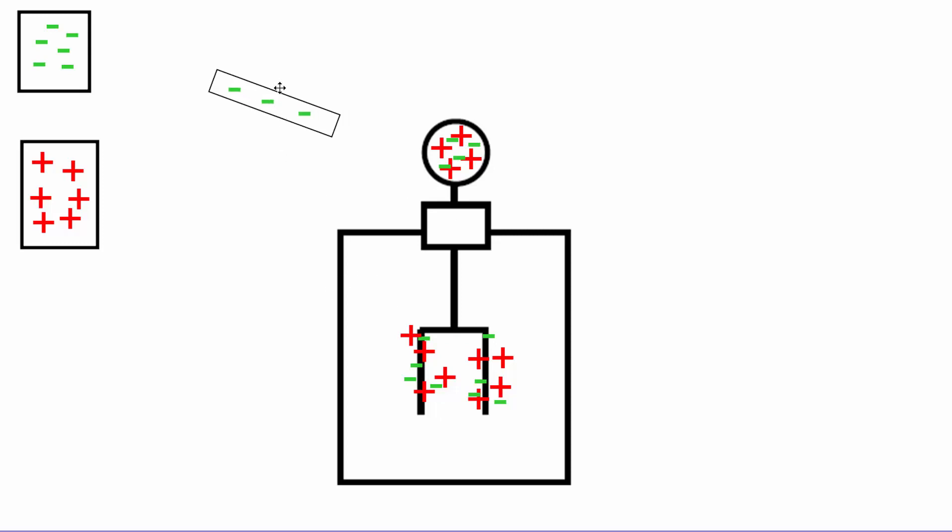This rod is negatively charged and what I'm going to do is I'm going to bring it near the electroscope and I'm not going to touch it yet in the beginning. And so now we have to ask ourselves, okay, so we've got a negatively charged object near a neutral conductor. What's going to happen here?